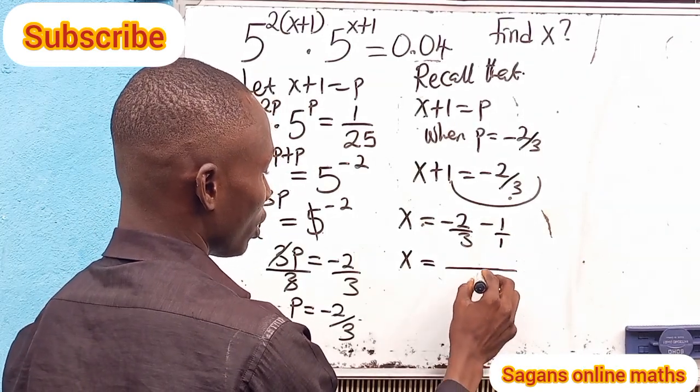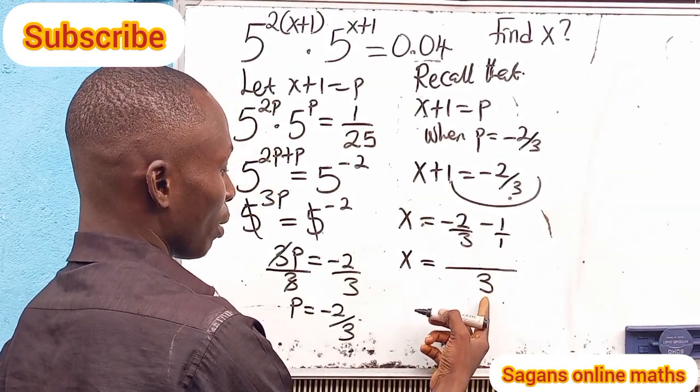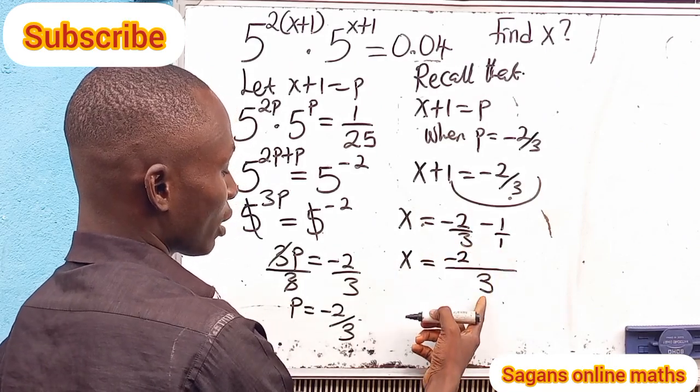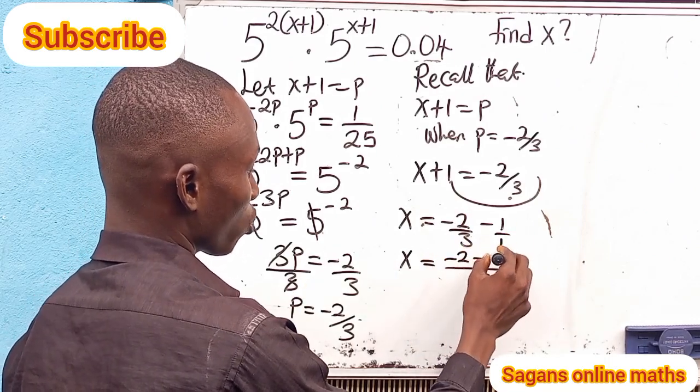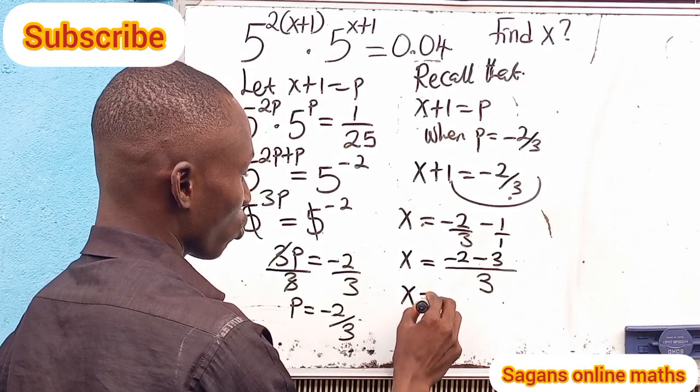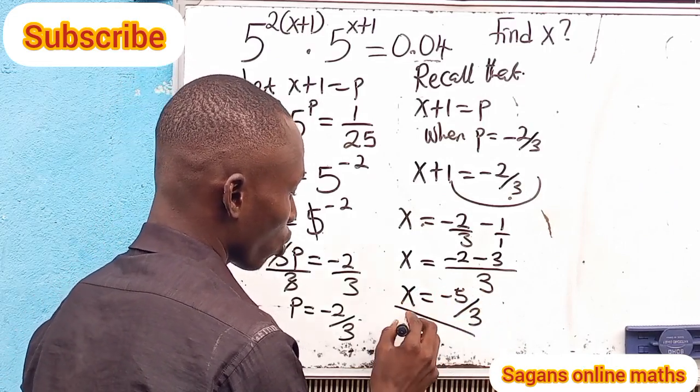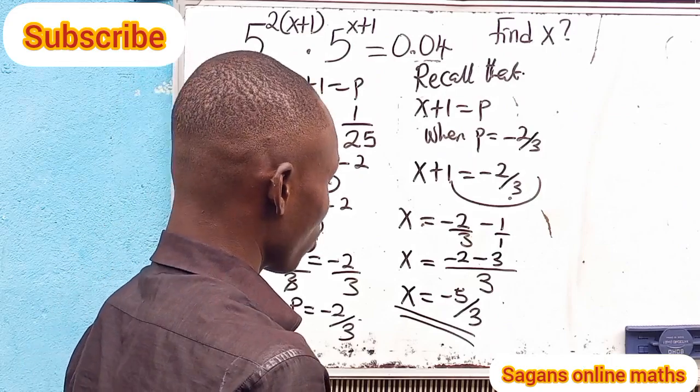Let's take the LCM. Our LCM is 3. So we have (-2 - 3)/3, which equals -5/3. Therefore, x equals -5/3, and this is the solution to this particular problem.